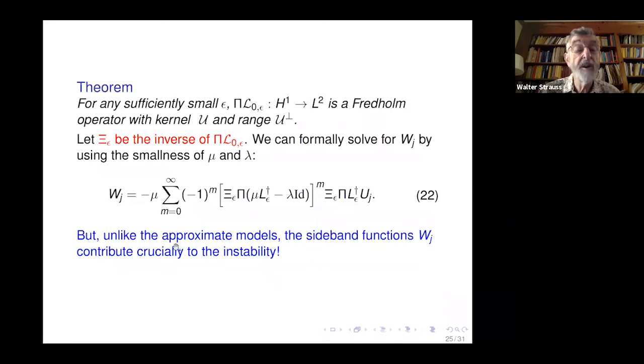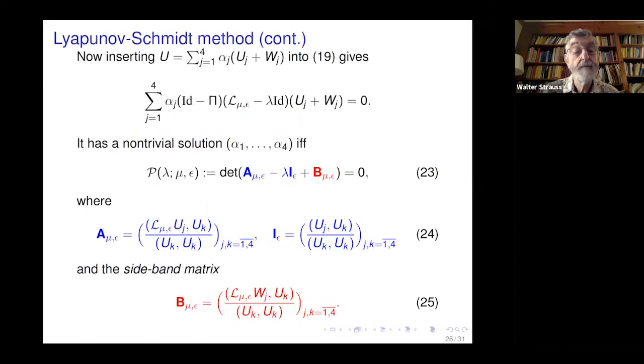We can invert it. That's not so hard. We call the inverse C epsilon. Then because mu and lambda are small, we can write the Neumann series and get this formal formula for W1, W2. We call the W sideband functions because they come from the sideband mu. The Ws turn out to be very important, rather than just error terms.